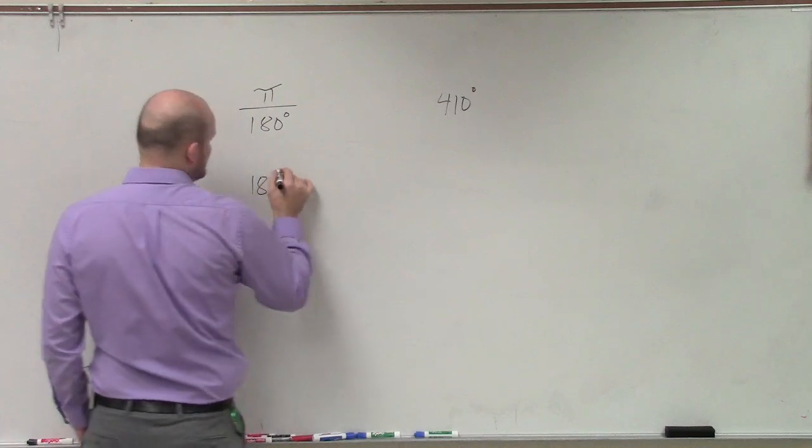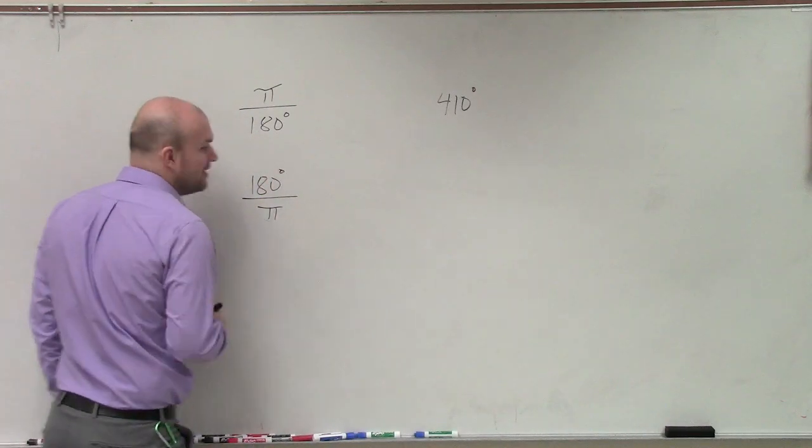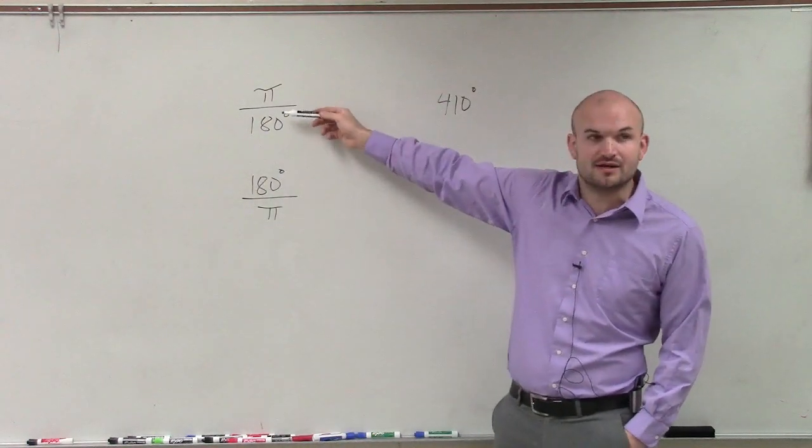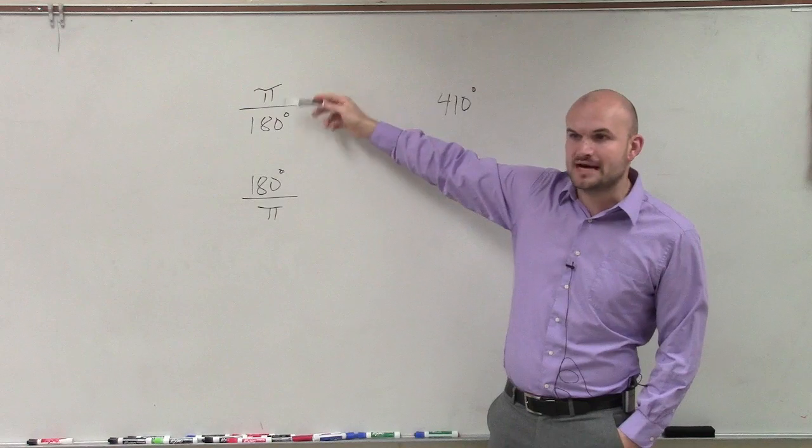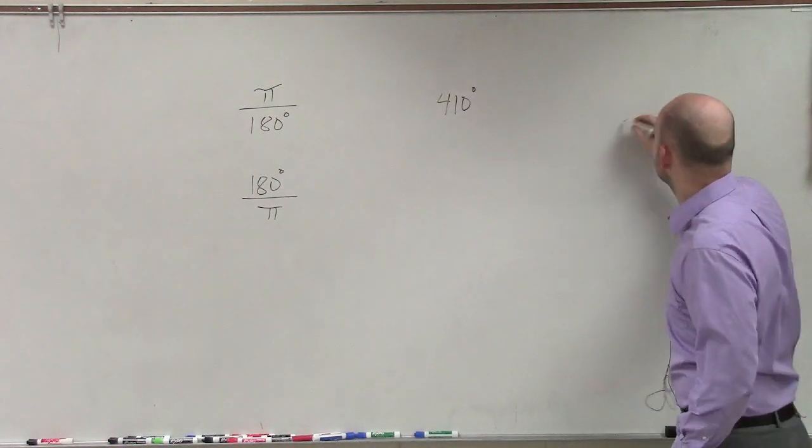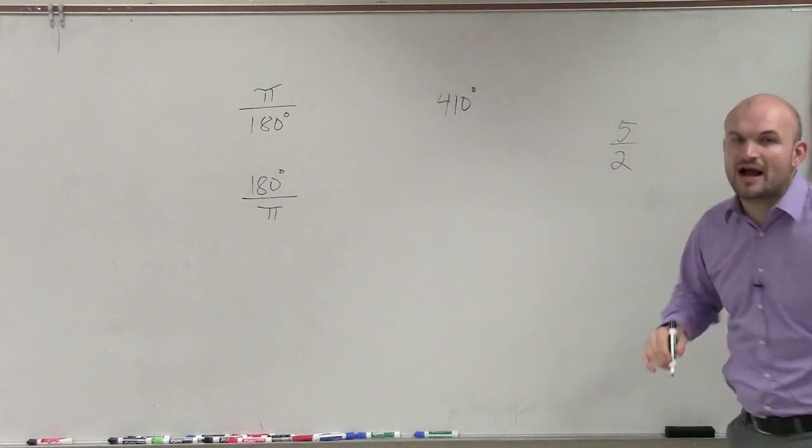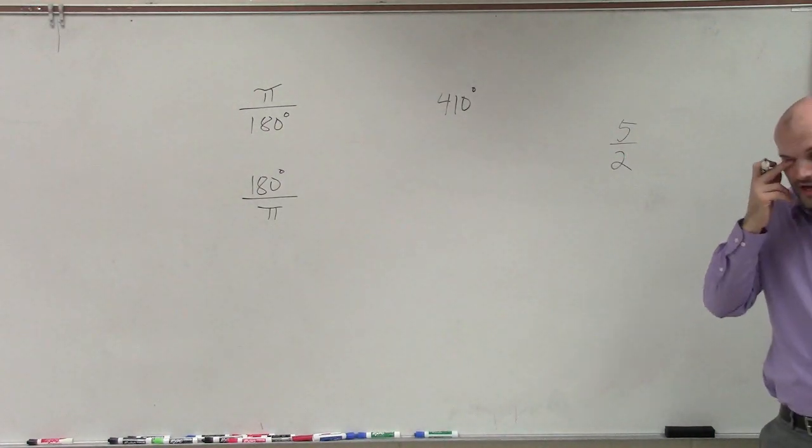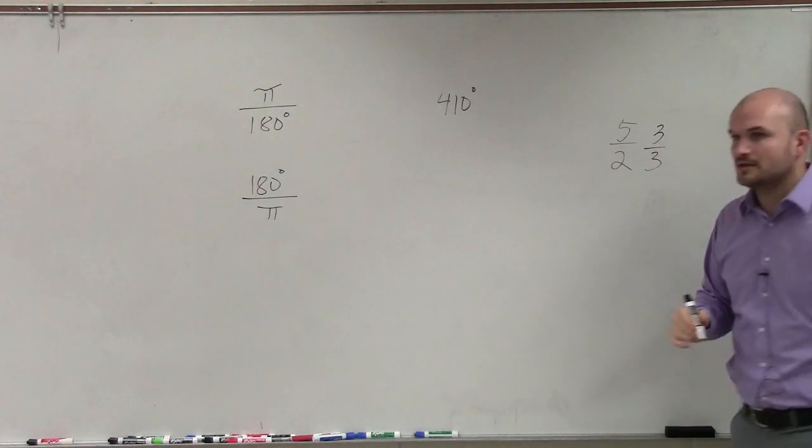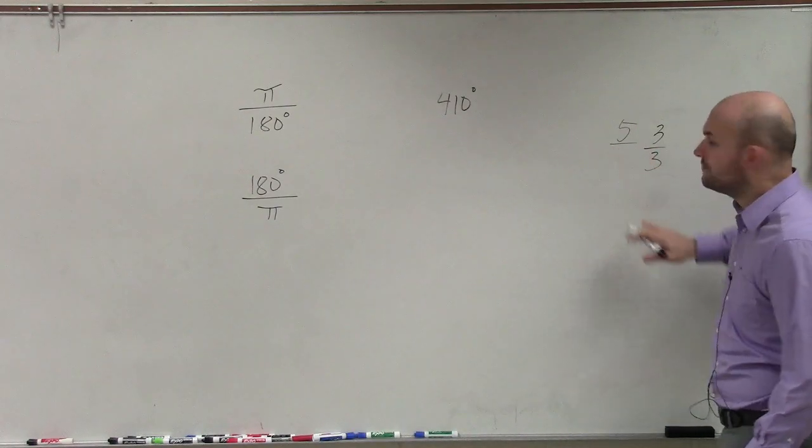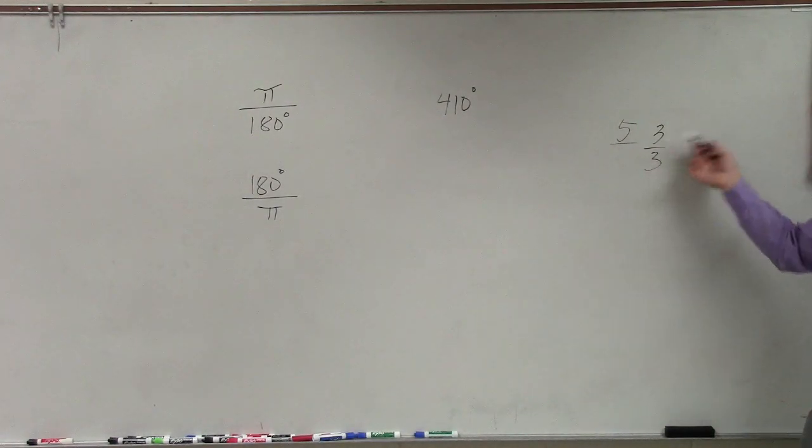And we also came up with this other ratio if we did 180 over π. And remember, I'm not changing the problem. Because if you look at this angle, is the angle the same for the top and the bottom? So that's like if I took the fraction 5 halves, if I multiply that by 3 over 3, is that changing my fraction at all? No. Even if you took the number 5 and multiply it by 3 over 3, is that changing my number? No. It's just making a different form of it, but the value is still going to be the same.